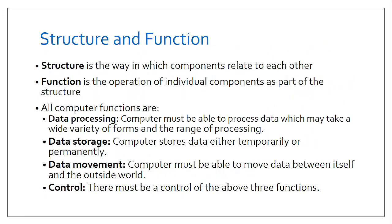Now let's look at structure and function. When we talk about computer architecture, we have the structure of the computer — the way in which components relate to each other. We have input devices that send signals to the processor, and output devices that receive signals. We also have function, which is the operation of individual components as part of the structure, such as the functionality of a mouse or the CPU.